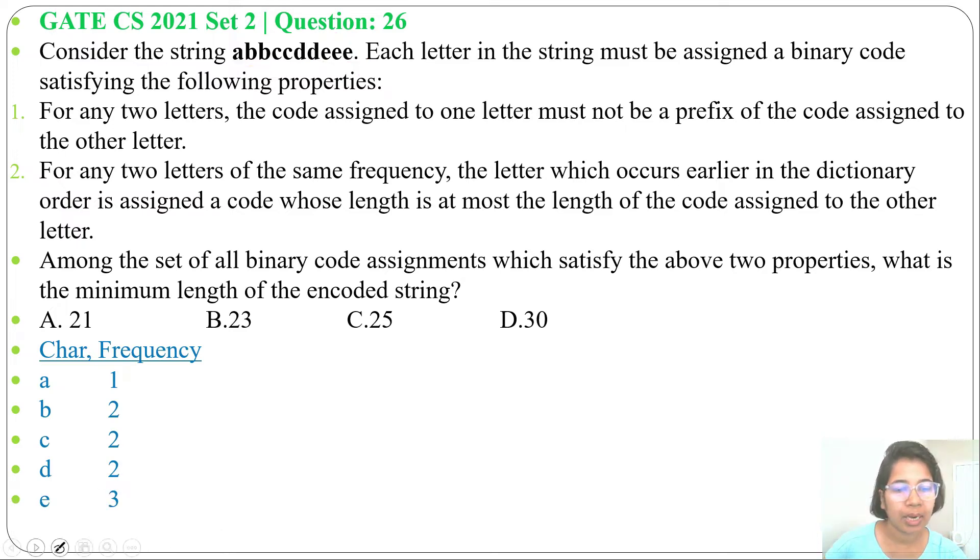Now we'll create the Huffman tree. So minimum frequency is 1, we'll take 'a'. Now we have three characters whose frequency is the same. So according to the second property, first we'll take 'd'. So 'a' and 'd' addition will be 3: 1 plus 2 equals 3. Next we'll add the level for the edges, so left child will be 0, right child will be 1.